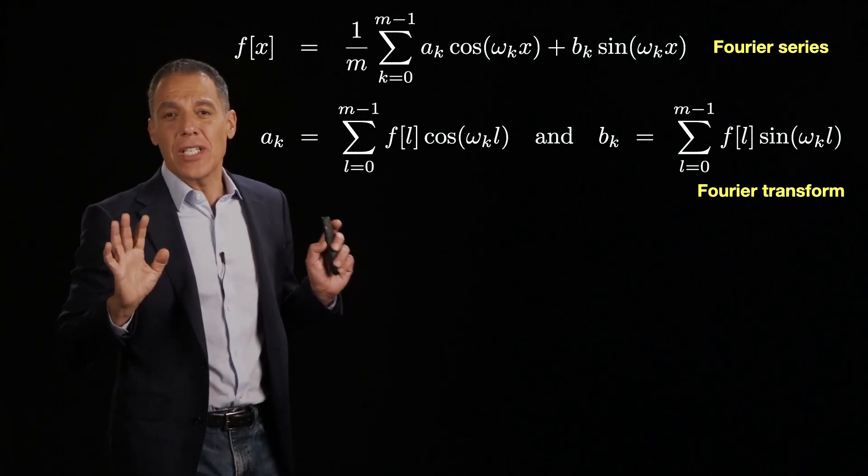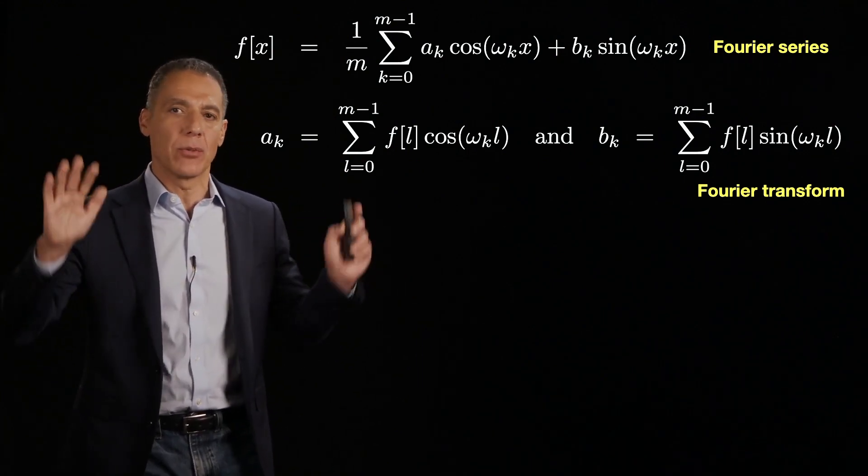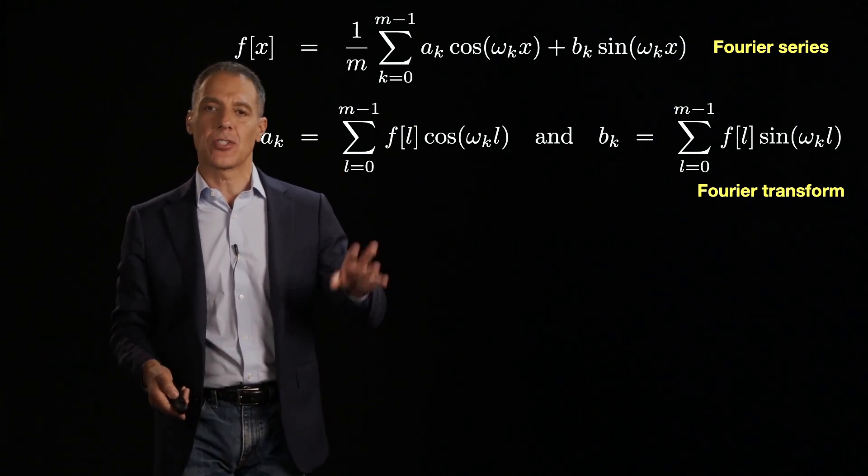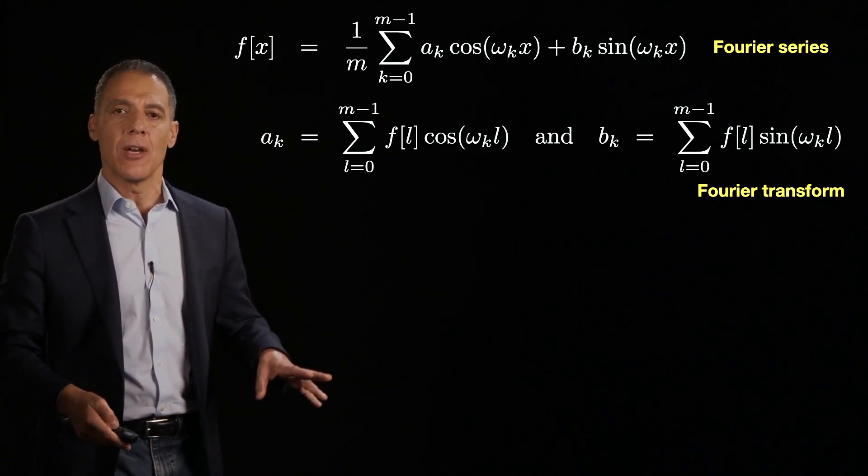Between the signal and the underlying basis vector, and that's the Fourier transform. And really, we could have stopped here. This could have been it.